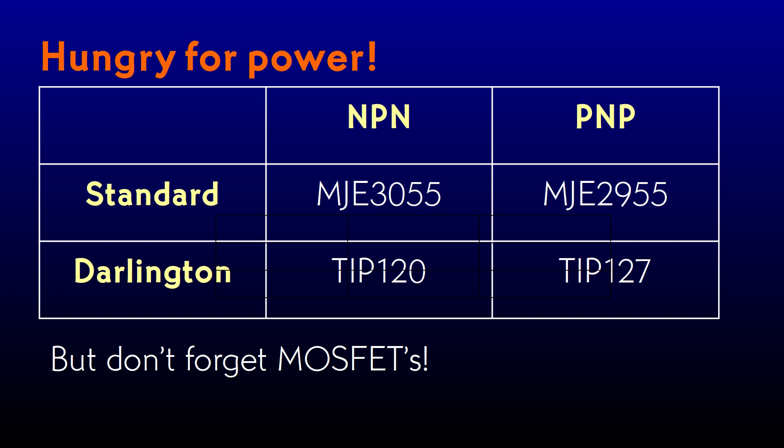Circuits like speaker amplifiers or motor drivers need a lot more power at their outputs. I keep a few power transistors on hand. Generally they're MJE3055 and 2955 for standard transistors. And it's convenient to have Darlington pairs in a single package, so TIP-120 and TIP-127 come in handy as well. There are lots of other parts that would serve — these are just the ones that I found, but they're really popular. A lot of the time nowadays, power MOSFETs will do a better job, but that's a whole other topic for another time.